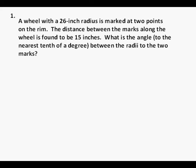Problem 1. A wheel with a 26-inch radius is marked at two points on the rim. The distance between the marks along the wheel is found to be 15 inches. What is the angle to the nearest tenth of a degree between the radii to the two marks?